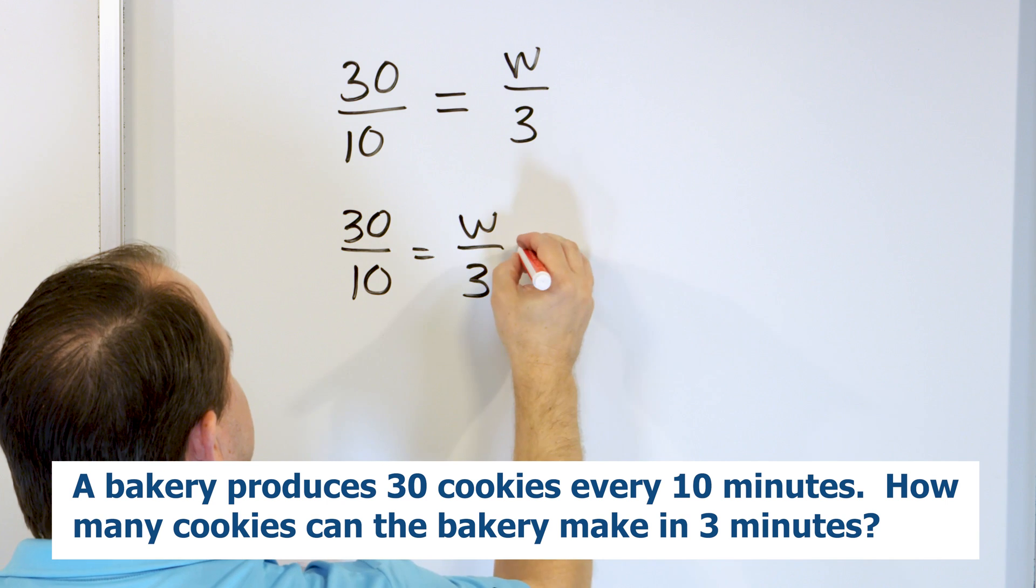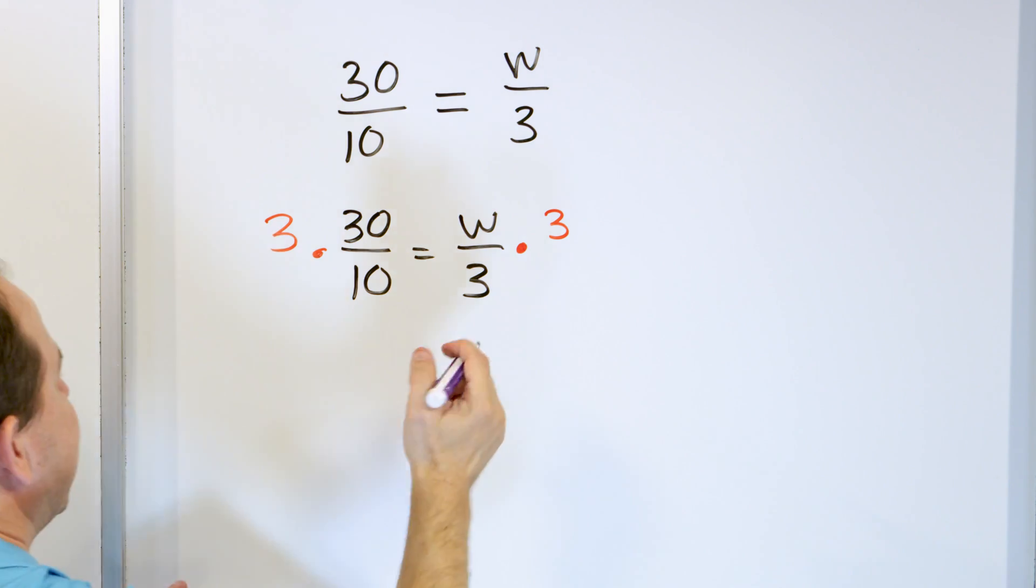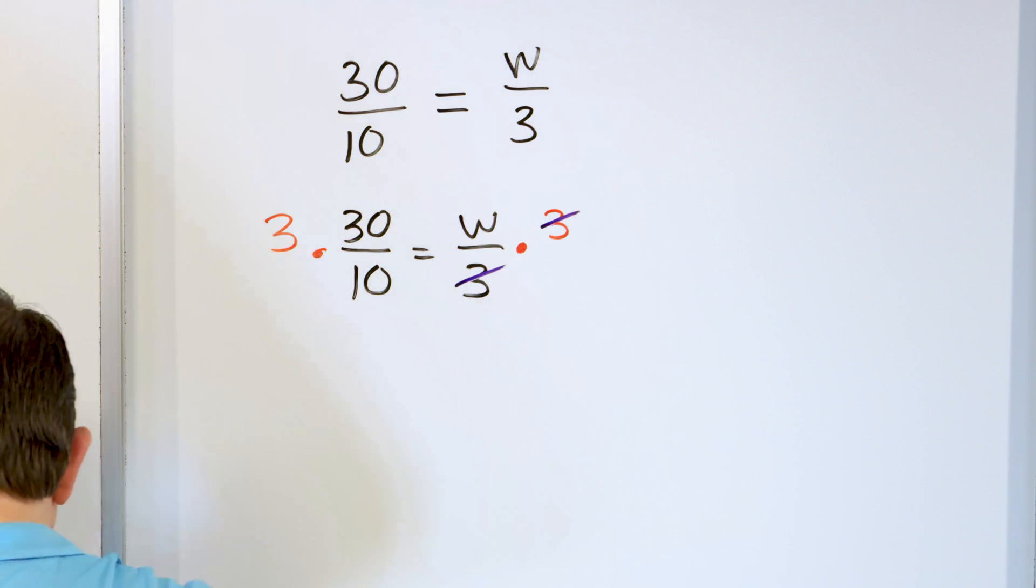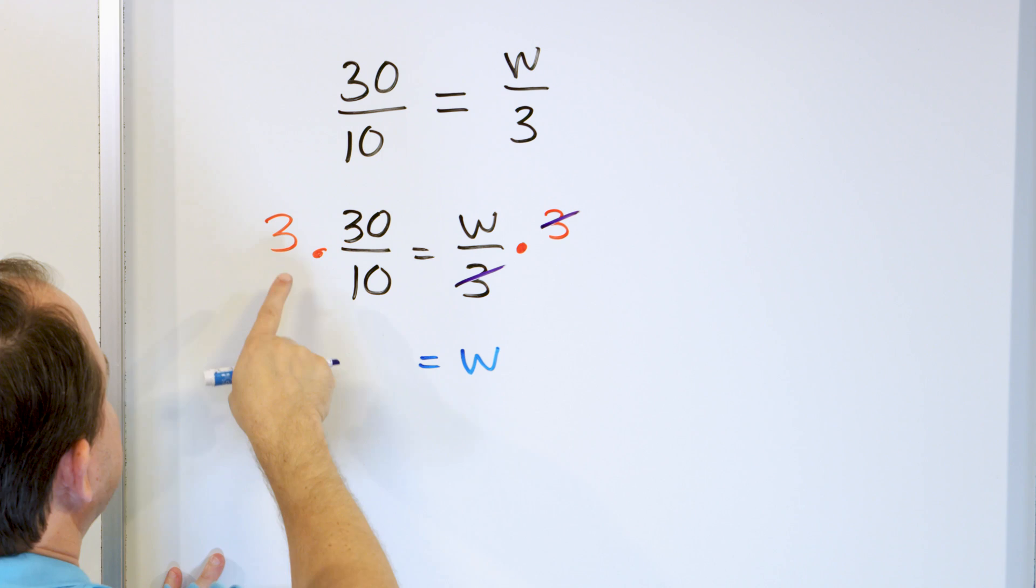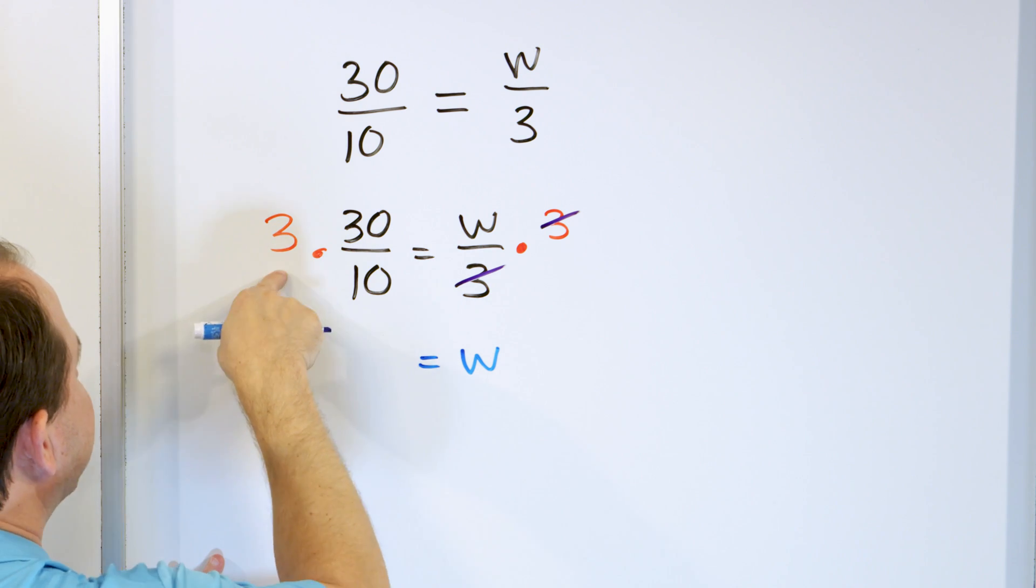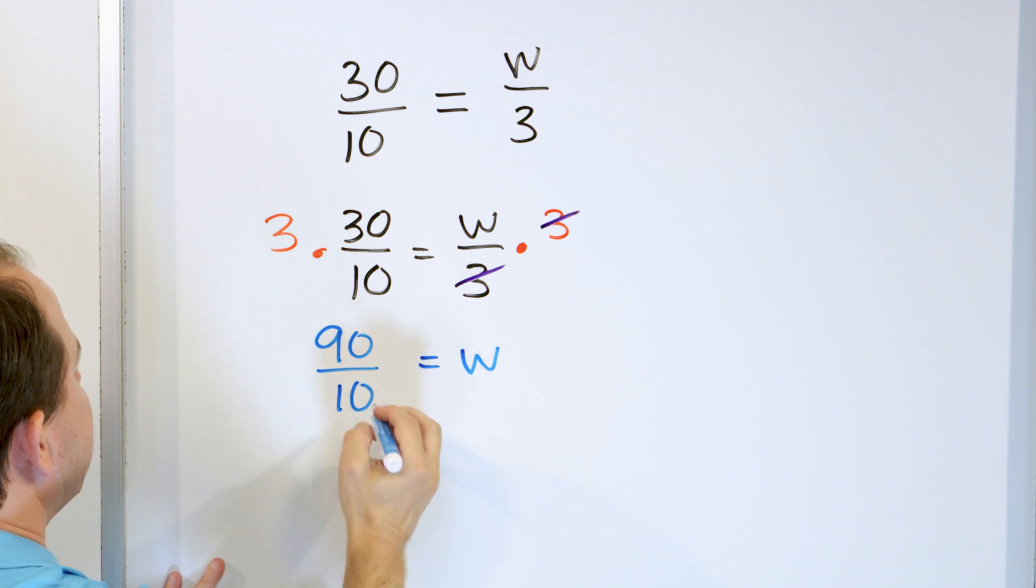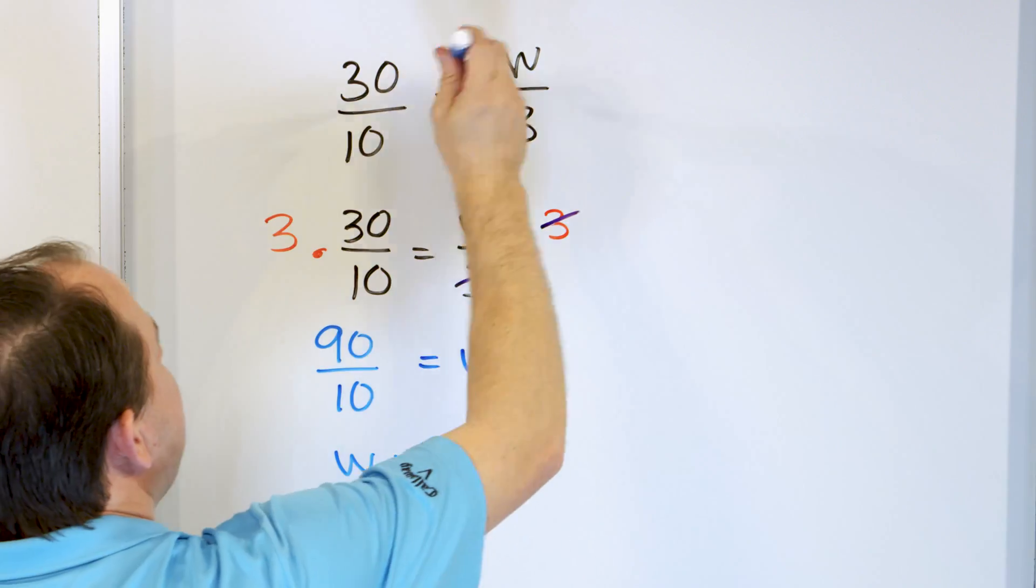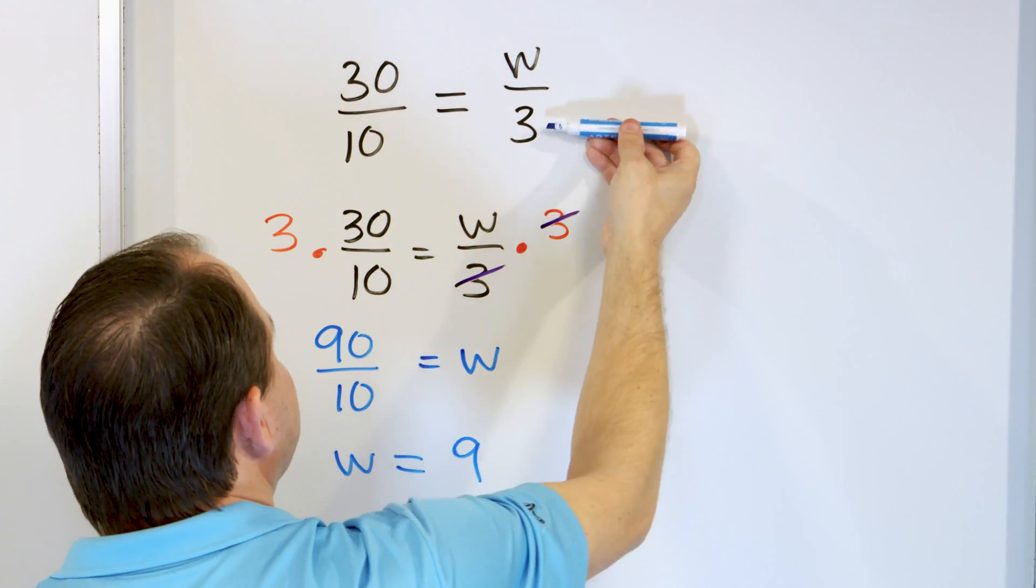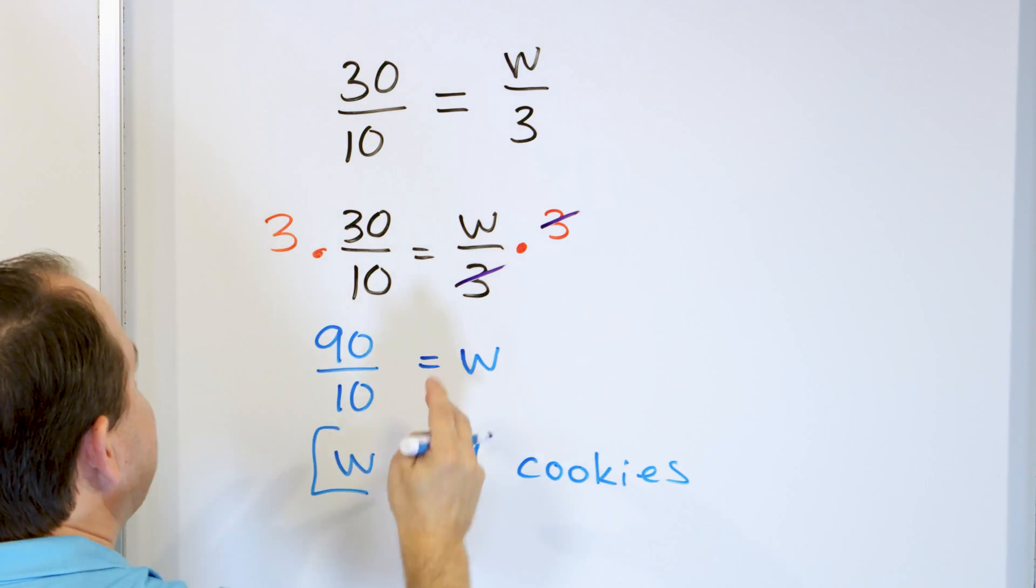So let's rewrite what we have. 30, 10, W, 3. How do we find out what W is? We're dividing by three, so we're going to do the opposite by multiplying. Like this. Now on the right-hand side, the three cancels with the three, and all I'm going to have left on the right-hand side is just the unknown W. On the left-hand side, I have to multiply. This is really a 3 over 1. 3 times 30 is 90, and 10 times the invisible one is 10. And so W, what's 90 divided by 10? 9. And what am I calculating? This is cookies per minute, or cookies made in this many minutes, and this is cookies made in three minutes, so it's nine cookies. That's how many I'm going to make in three minutes.